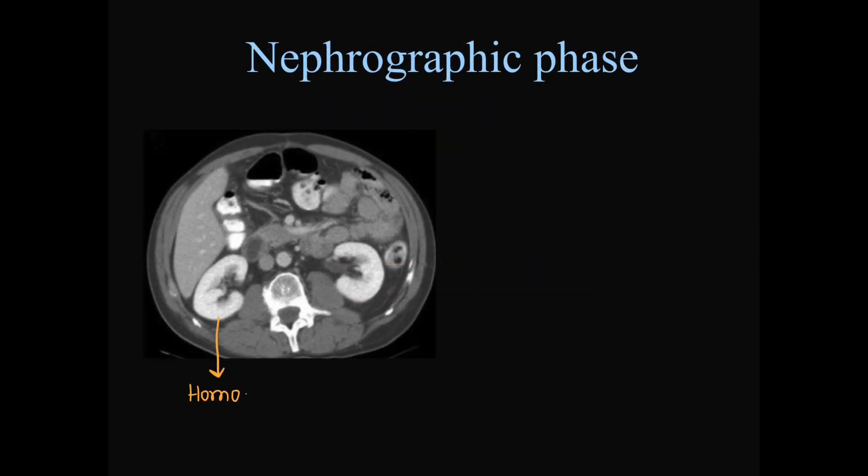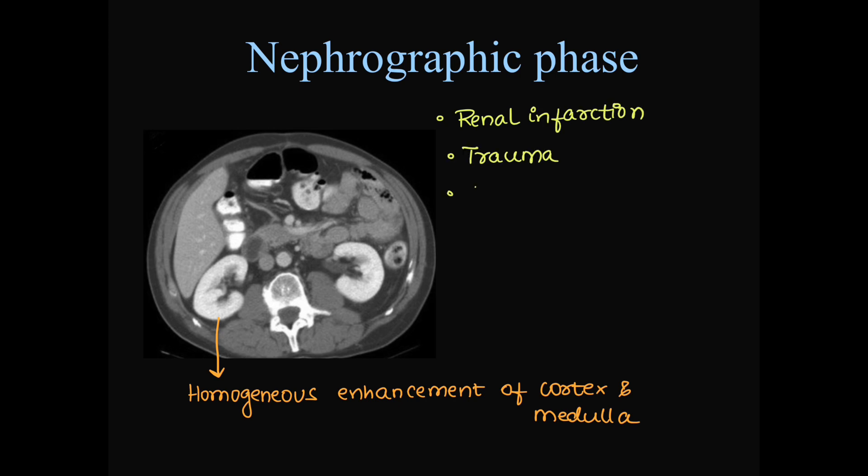Next, in nephrographic phase, this is how we can see this homogenous enhancement or uniform enhancement of the whole renal parenchyma including cortex and medulla. If any renal lesions are present like renal infarction, renal trauma or acute pyelonephritis and especially renal masses can be very well seen in this phase. If they are less than 3 cm, they can be very well identified. And all these appear as hypodense areas against the background of enhancing renal parenchyma.